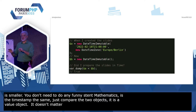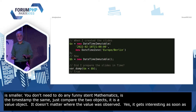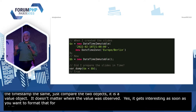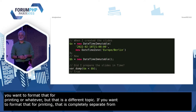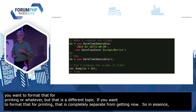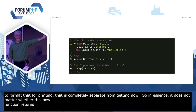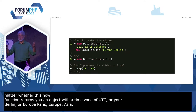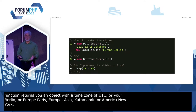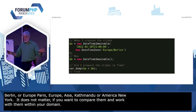It gets interesting as soon as you want to format that for printing or whatever, but that is a different topic. If you want to format for printing, that is completely separate from getting now. It doesn't matter whether this `now` function returns you an object with a time zone of UTC, or Europe/Berlin, or Europe/Paris, or Asia/Kathmandu, or America/New_York. It doesn't matter if you want to compare them, if you want to work with them within your domain.